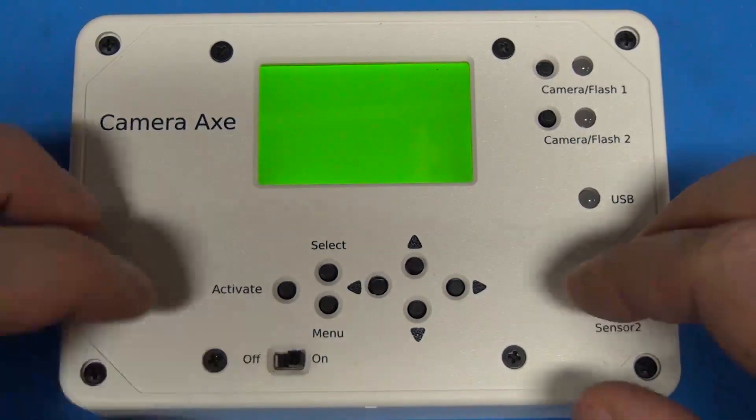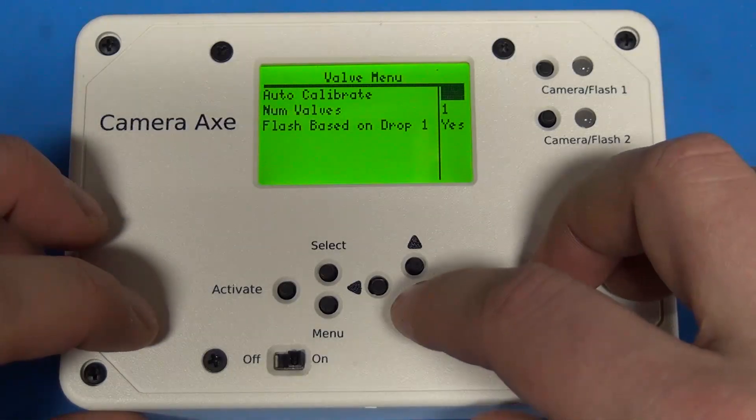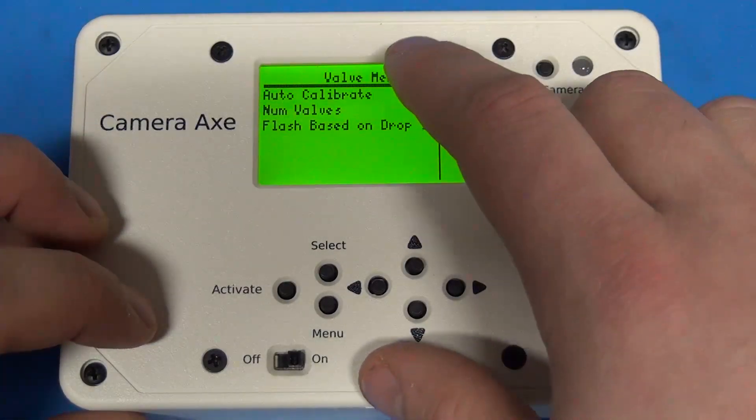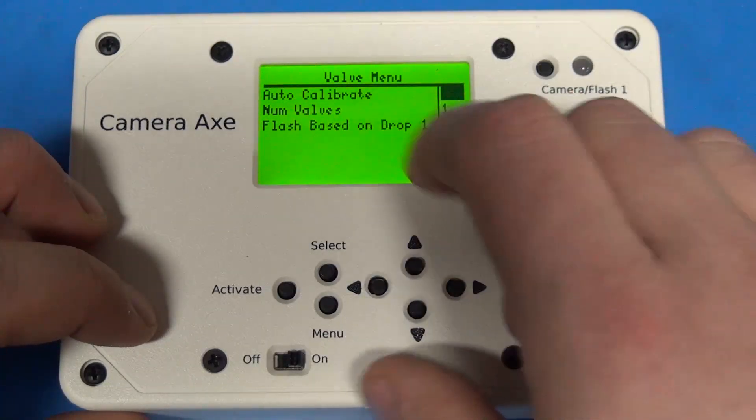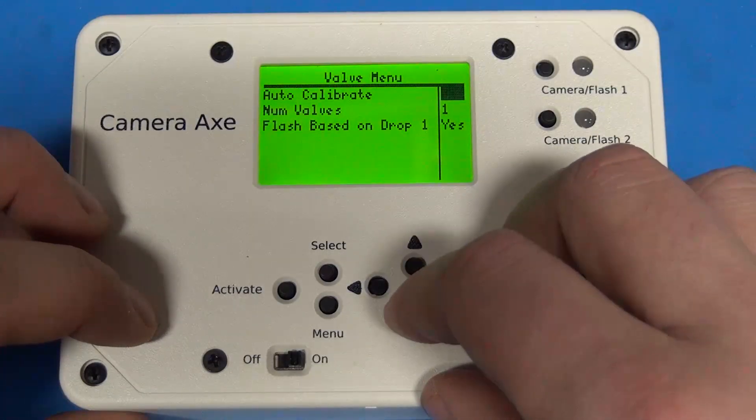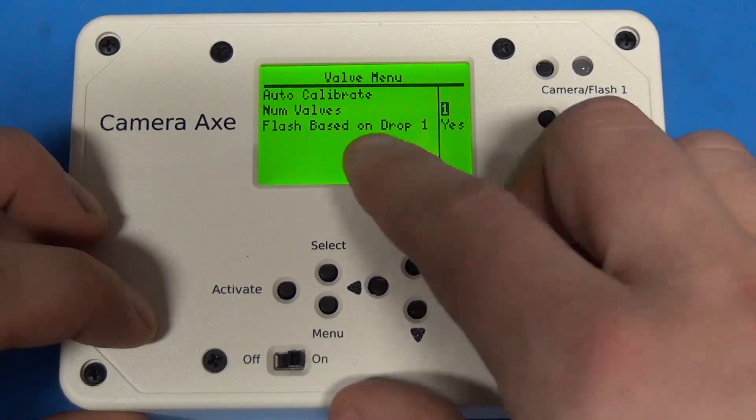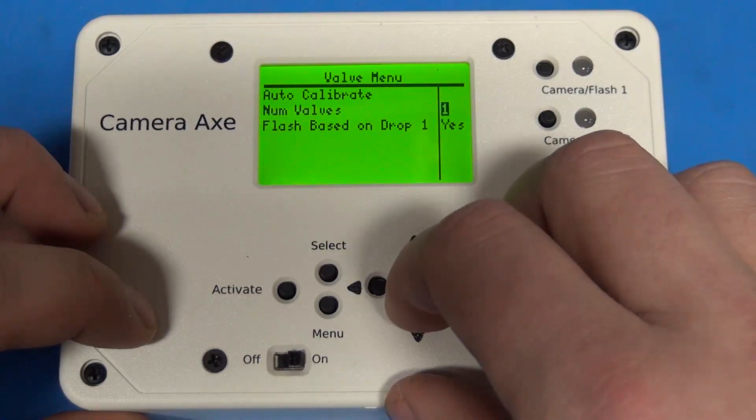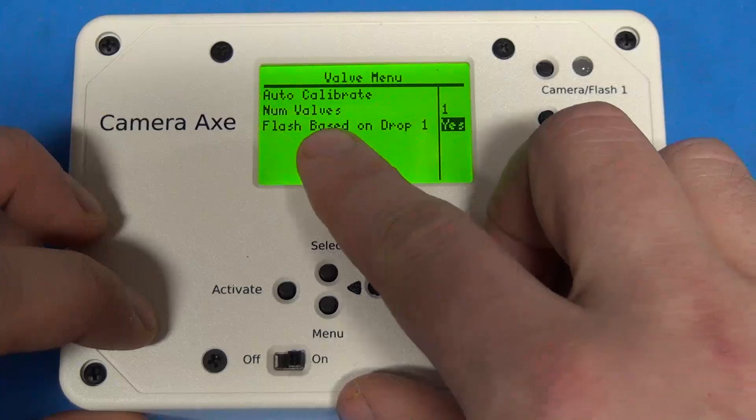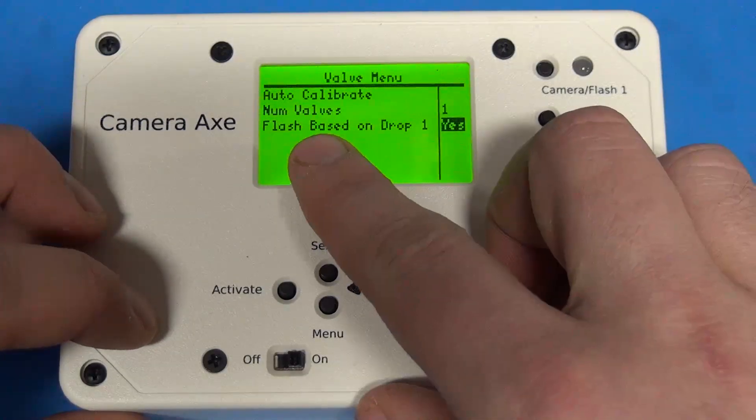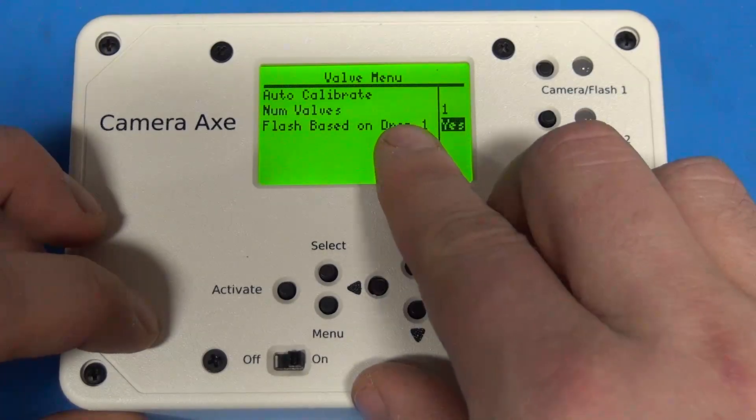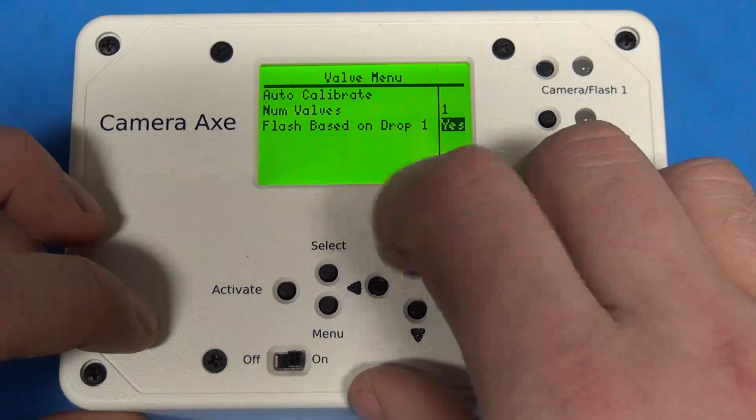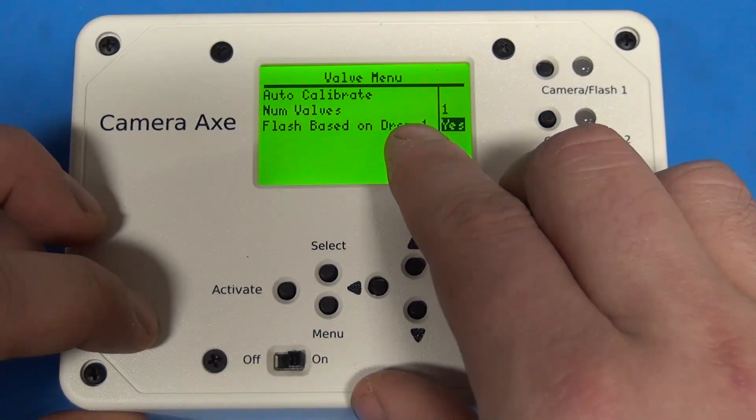So first off, let me show you what's changed in the software. It's not too much, but the valve menu now has an additional page of options. The first option is the auto calibrate. I'll just sort of skip over that one for now. Number of valves was moved to this page because this is sort of like the overall options page. And I also added a new option that people have been asking for, which is to base the flash delay off of the first drop instead of off of the last drop.